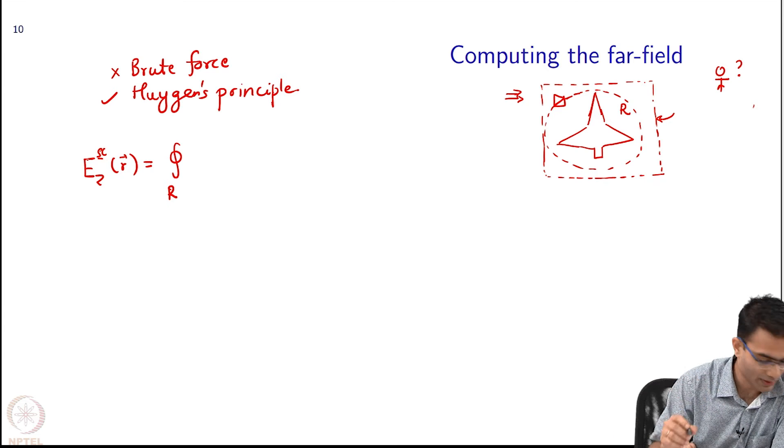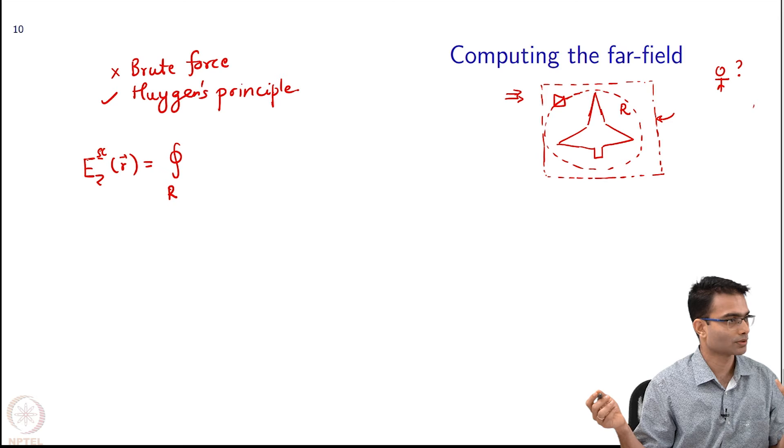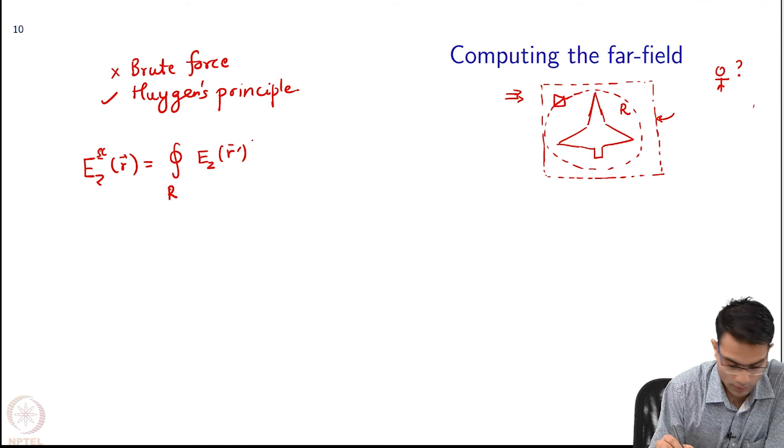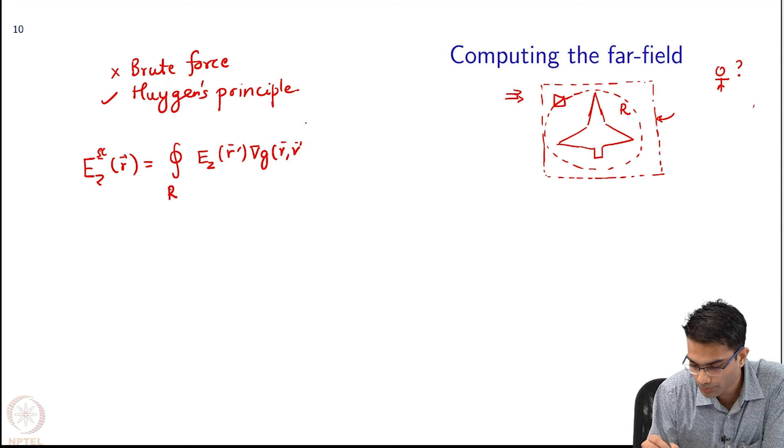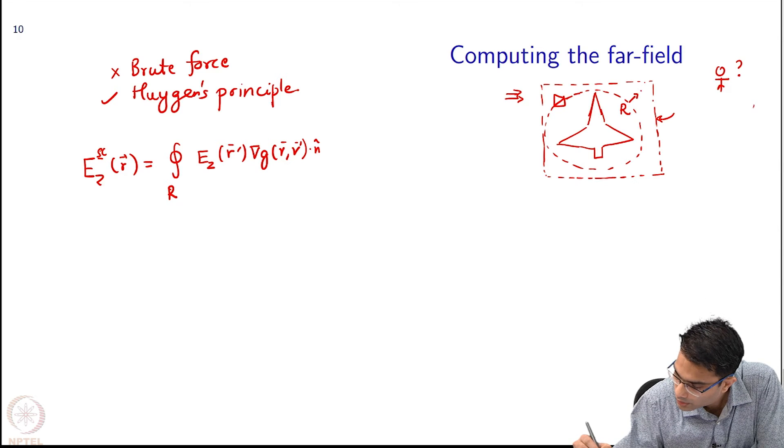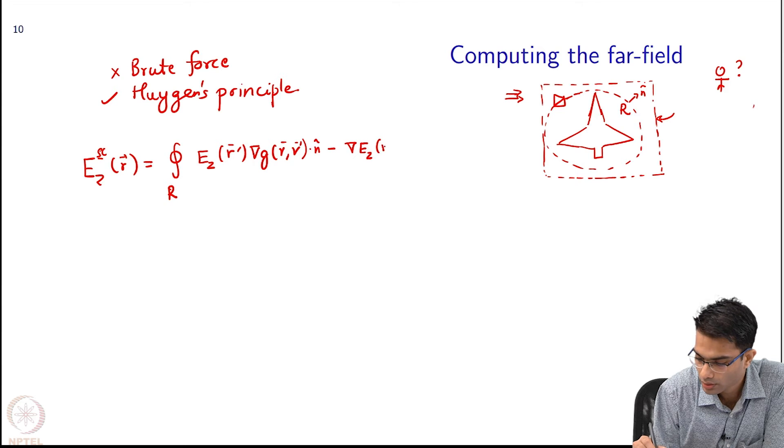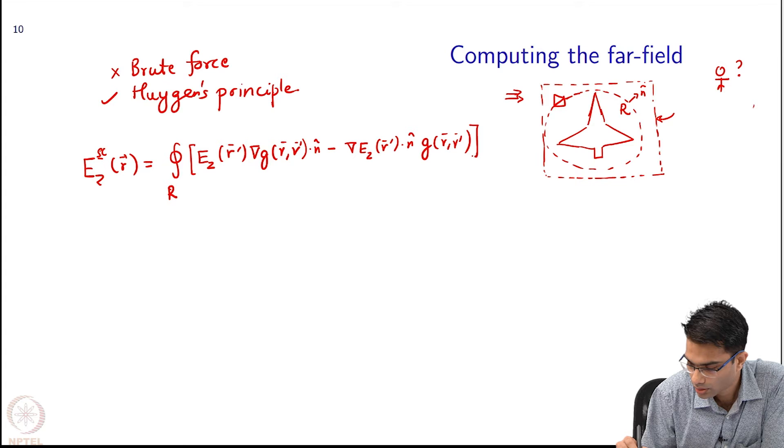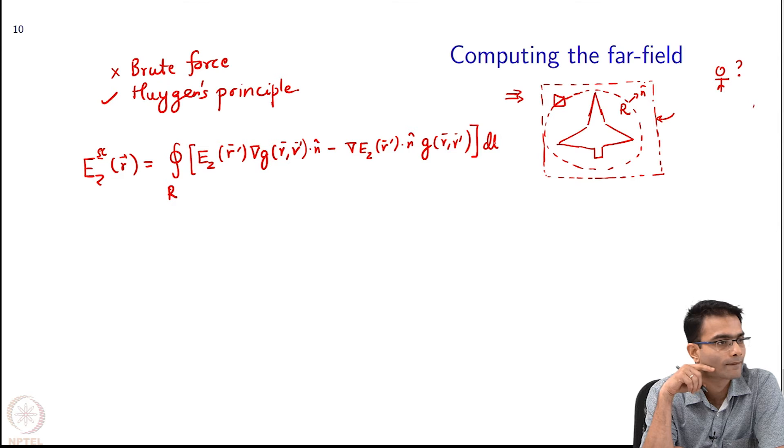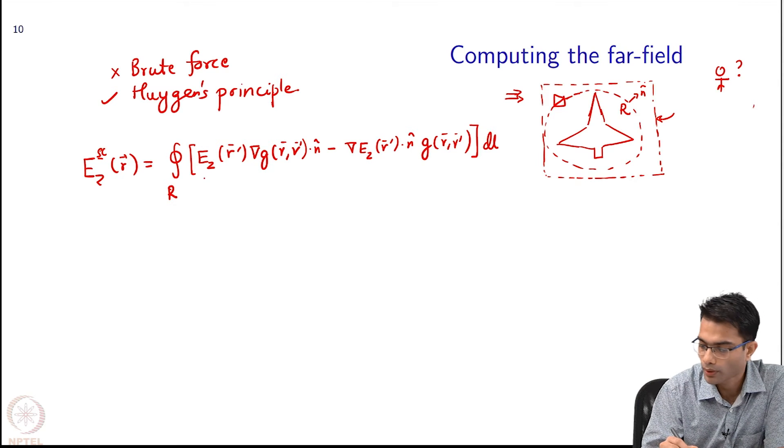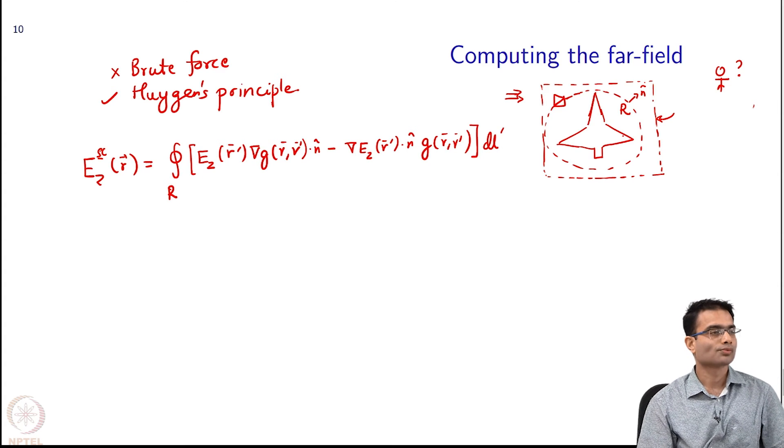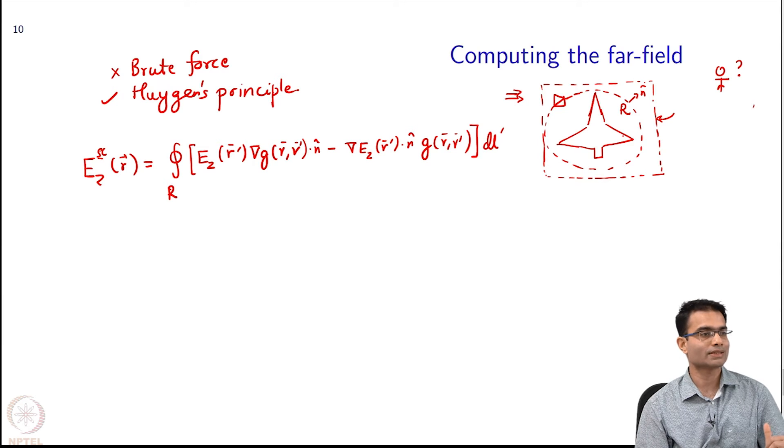So the first term. So remember this is going to be G and grad G those are the two terms. So the first one will be E z at R prime grad G of R R prime minus. So let me put in the dot N hat over here minus and D L let us call it D L prime. So let us do this because I am going over this is my contour. We are still in the T m polarization that is why I have written this as E z.